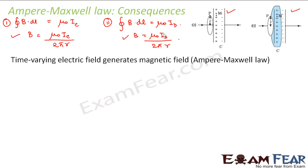The final conclusion of the Ampere-Maxwell law is what Maxwell originally proposed: a time-varying electric field should generate a magnetic field. Looking at the capacitor example, the electric field between the plates varies with time, producing a displacement current, which in turn produces a magnetic field. So a time-varying electric field does generate a magnetic field.